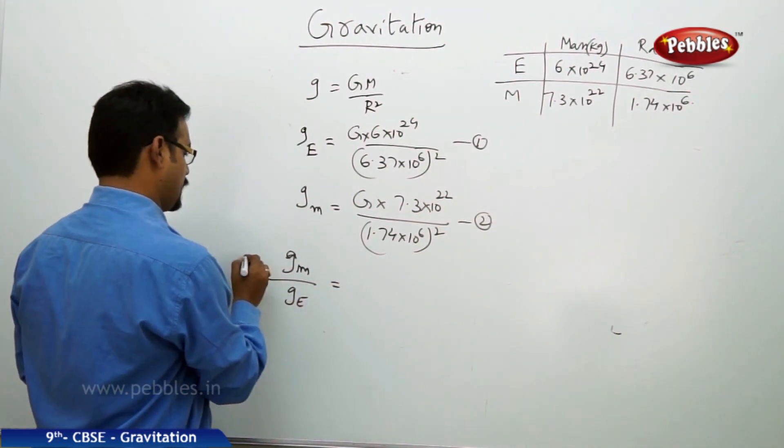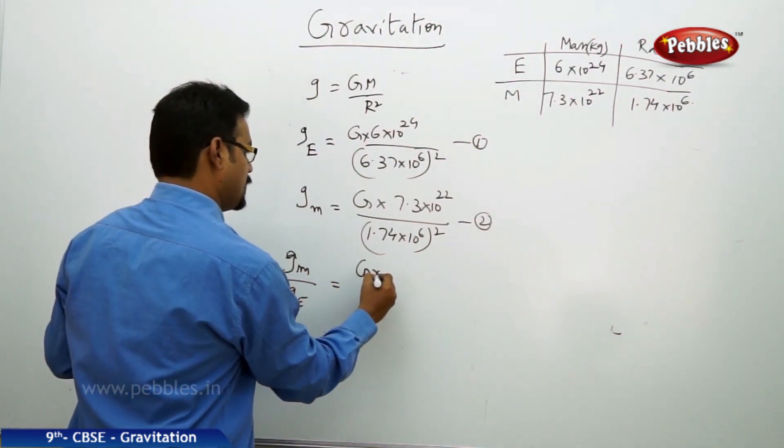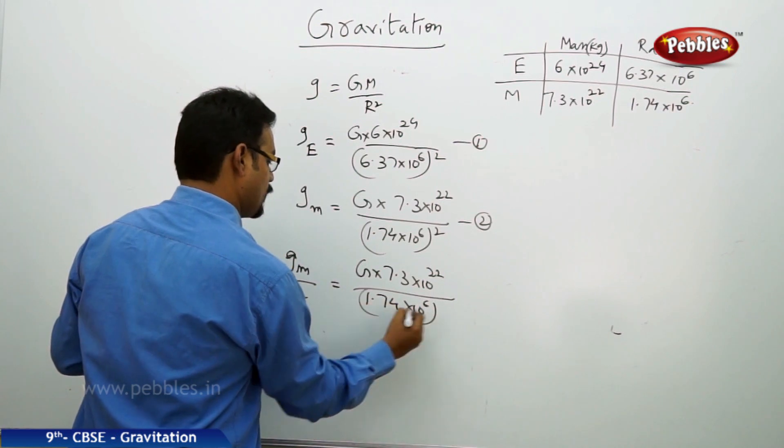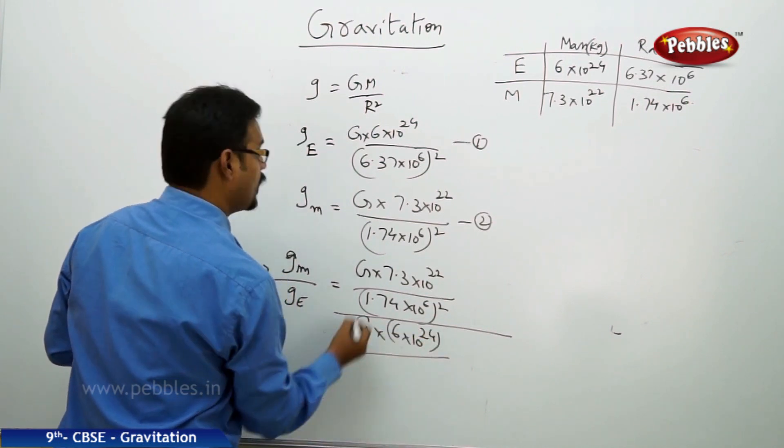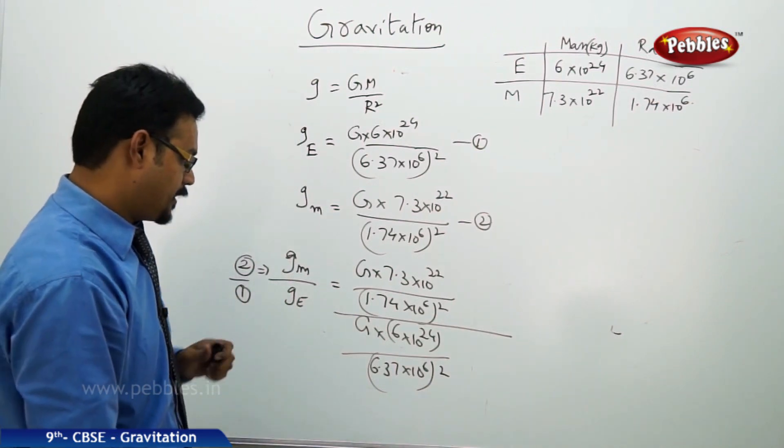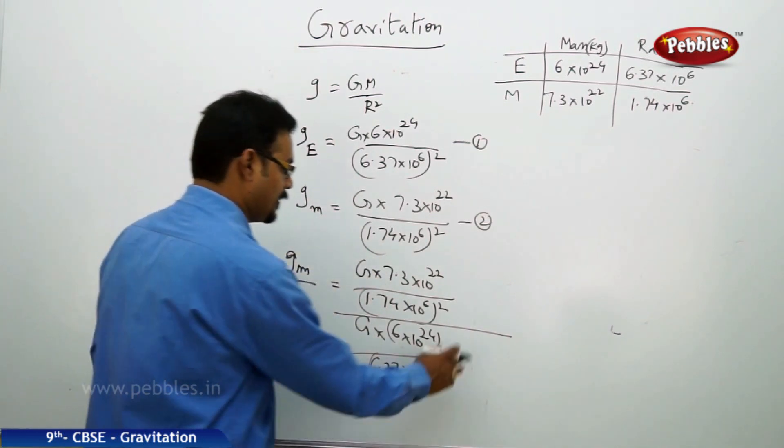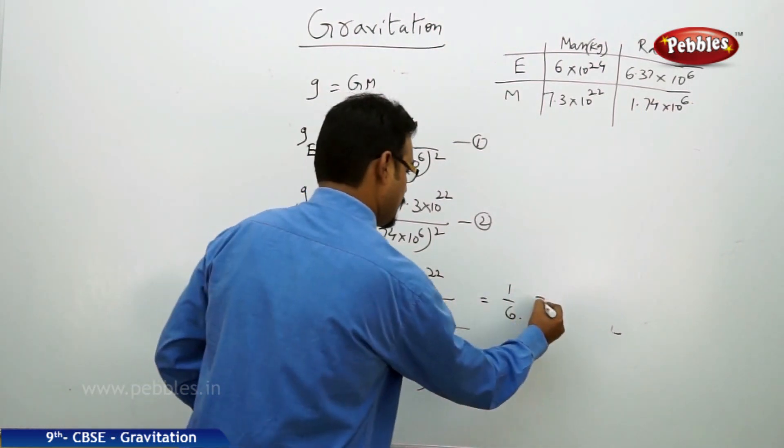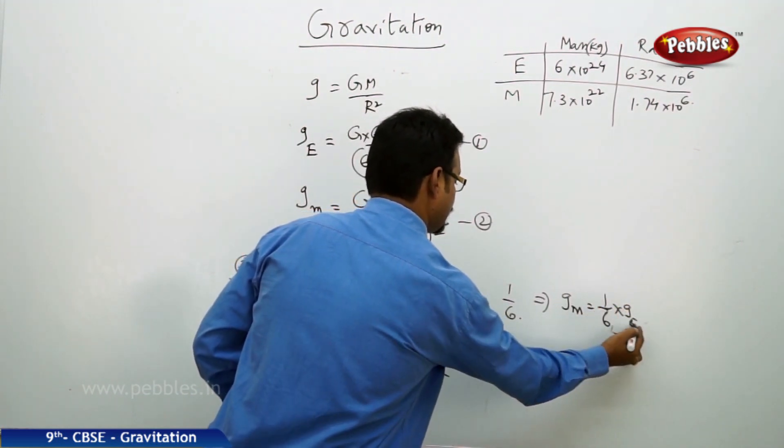Now g of moon by g of Earth means equation 2 by equation 1. What will happen? G into 7.3 into 10 power 22 by 1.74 into 10 power 6 whole squared, whole divided by this: g into 6 into 10 power 24 by 6.37 into 10 power 6 whole squared. So if you simplify this, taking this fraction to the upper numerator side, the fraction reversed—g, g cancel. If you simplify everything, then you will get 1 by 6.